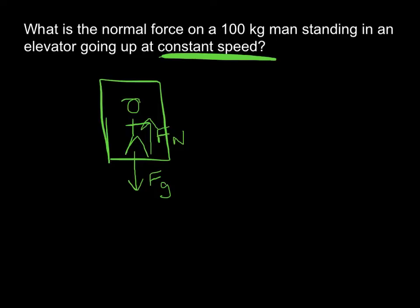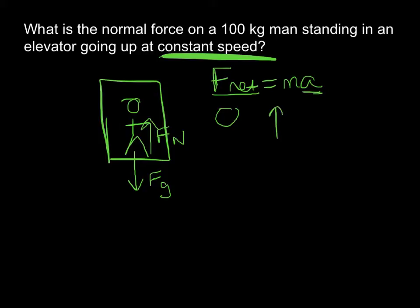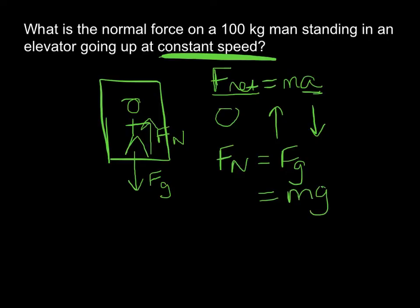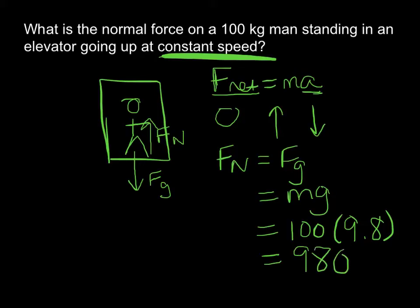If you're going at constant speed, you're not speeding up or slowing down, so you have no acceleration. Our net force is mass times acceleration, so if we have no acceleration, our net force is also zero. That tells us our up forces cancel out our down forces — they are equal. So our normal force equals our gravitational force: mass times gravity, which is 100 times 9.8. Our normal force is 980 newtons.